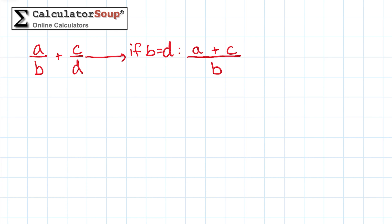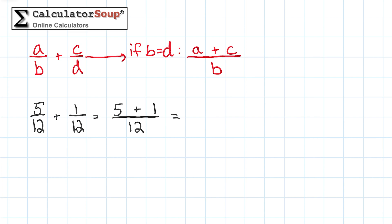Now let's do some examples. We'll follow this equation to find the sum of two fractions. For our first example, let's add the fractions 5 twelfths plus 1 twelfth. To add these fractions, add the top numbers together and put the result over the common denominator. 5 plus 1 is 6, and that goes over 12, so our result is 6 twelfths.